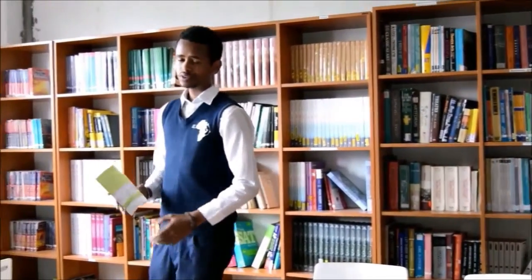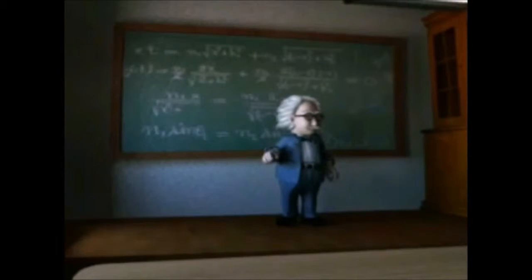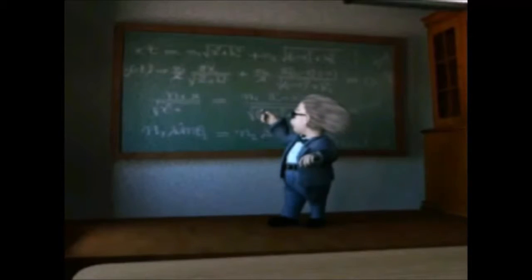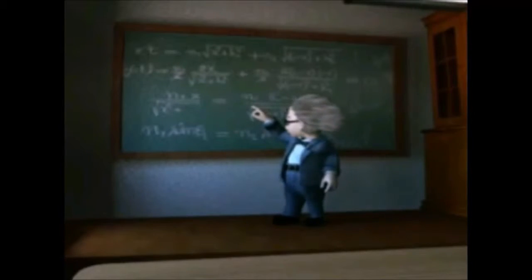The theory of relativity encompasses two theories: special relativity and general relativity. Special relativity states that the laws of physics apply no matter how fast an object is moving. Einstein applied this principle to light, stating that the speed of light, represented by C, is constant. Light always travels at the same speed for all observers, no matter how fast you're moving or how fast the source of light is moving.